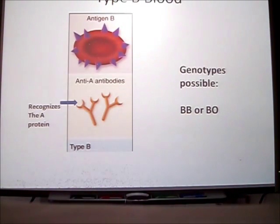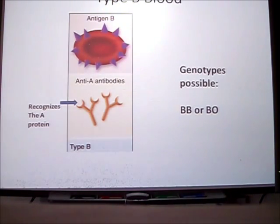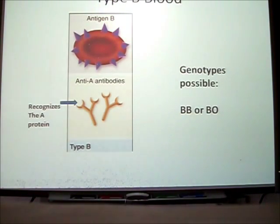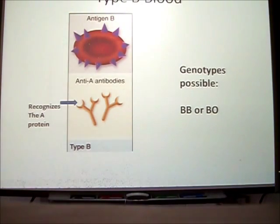B blood is a little bit different. You have a different antigen or protein on your red blood cells — you have the B antigen. In your blood plasma, you also have an antibody that protects you from A blood, so you have the anti-A antibody. You can have two different genotypes possible if you have B blood: you can be homozygous BB, or heterozygous BO.